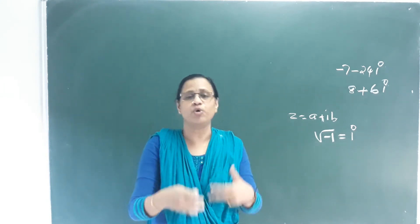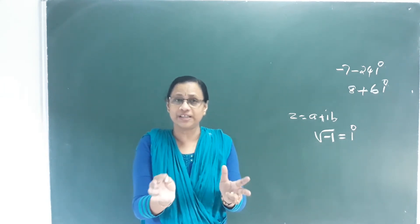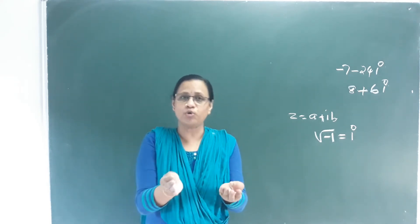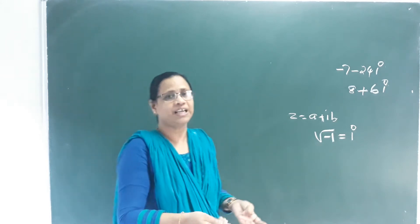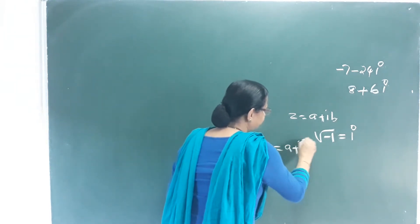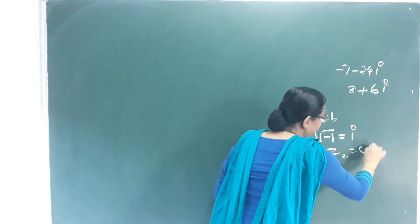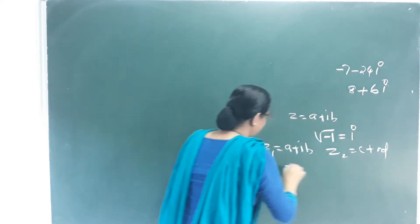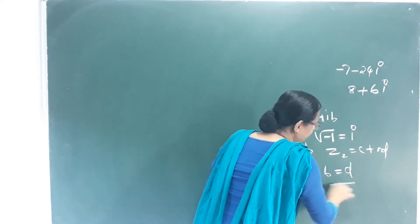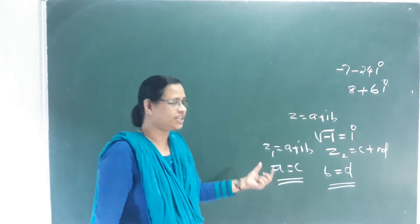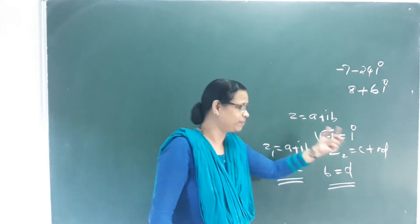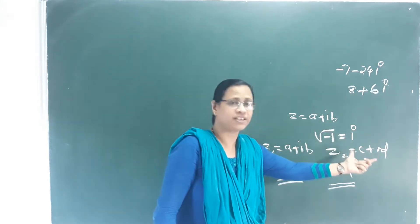We have to denote equality in complex numbers. Equality means two complex numbers are equal: Z₁ = A + iB and Z₂ = C + iD. Equality means A = C and B = D — that is, real part equals real part, and imaginary part equals imaginary part.